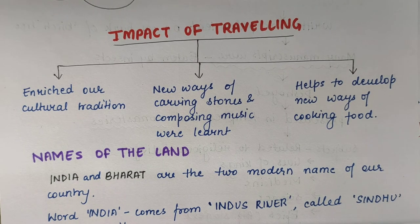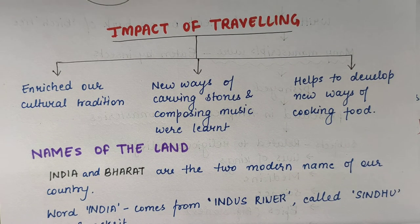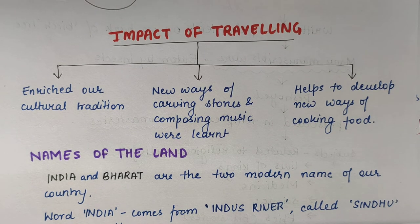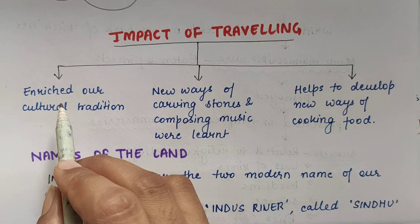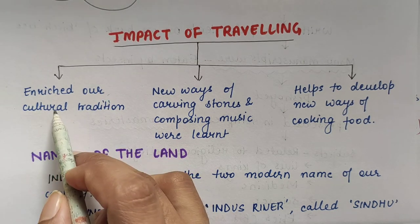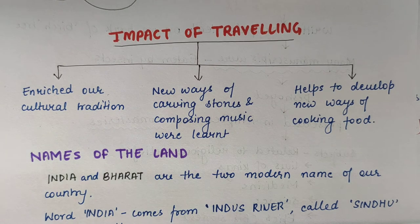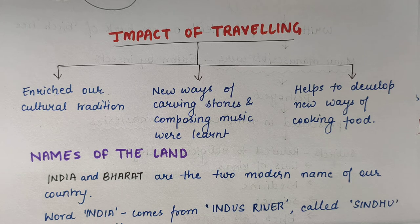Now, the impact of travelling. How did this travelling affect us? Jaise travelling hoti thi, ab log ek jagah se dusri jagah ja rahe hain, their knowledge was also exchanged. So due to this travelling, first, it enriched our cultural tradition — our culture, the way of celebrating festivals, the way we dressed, the things we eat. When people travelled abroad, our culture enriched and increased with new things added.